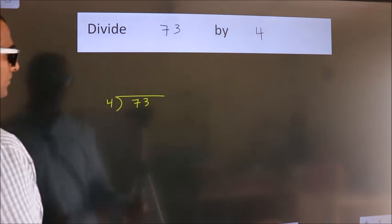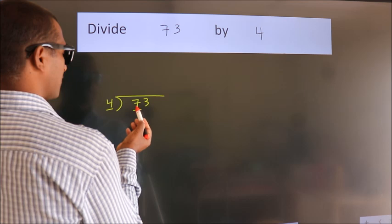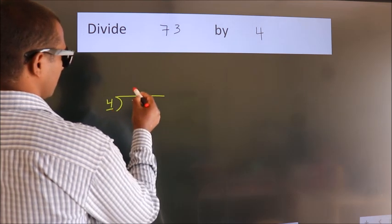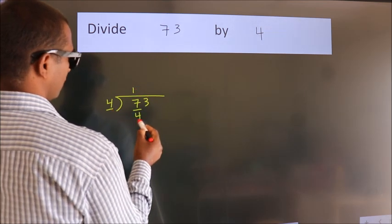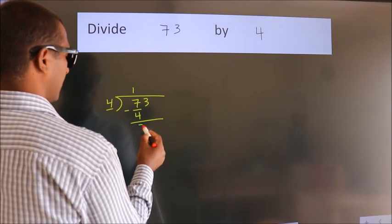Next, here we have 7, here 4. A number close to 7 in the 4 table is 4 once—that's 4. Now we subtract and get 3.